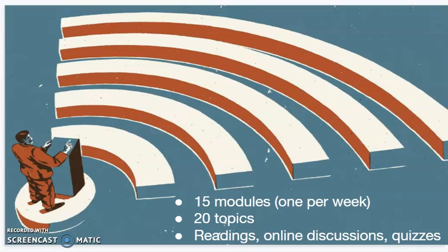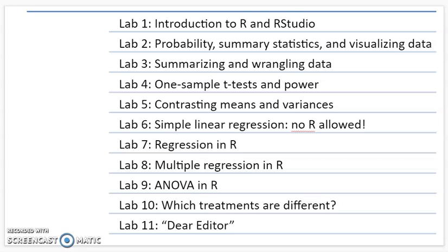Those modules cover 20 different statistical topics. All assigned readings, online discussions, and quizzes are the shorter assignments you'll do, and they are always due on Wednesdays by 11:59 p.m. A large component of the course is your labs — we have 11 different labs. Many of them use R, and you'll learn R as part of taking this course. Most of the labs focus on using R, and approximately one lab is due every week. That schedule is listed in the Canvas course site for when each of those labs are due.